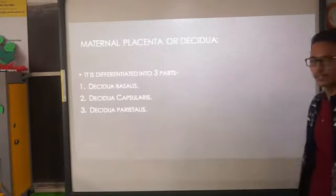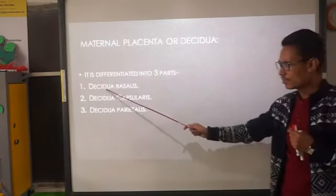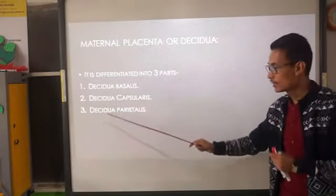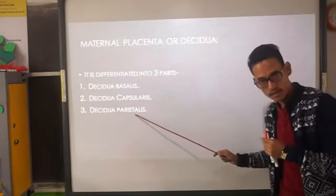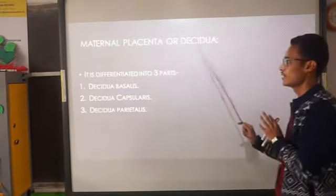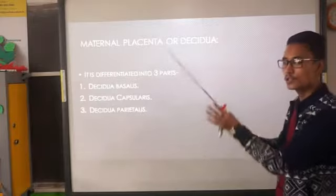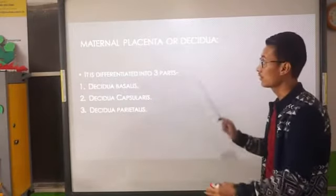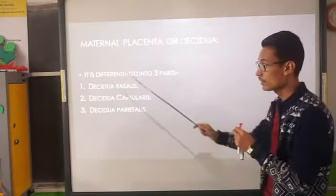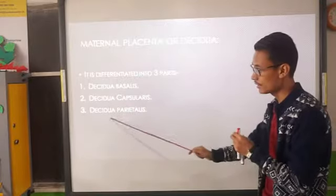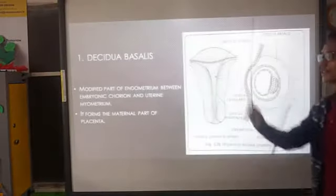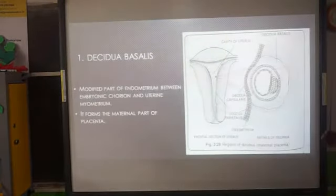The maternal placenta or decidua has three parts: decidua basalis, decidua capsularis, and decidua parietalis. The uterus has three layers: endometrium, myometrium, and perimetrium. Decidua basalis is the modified part of the endometrium between the embryonic chorion and the uterine myometrium — the portion between the chorionic villi of the fetus and the myometrium of the uterus. It forms the maternal part of the placenta.